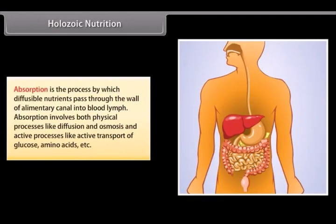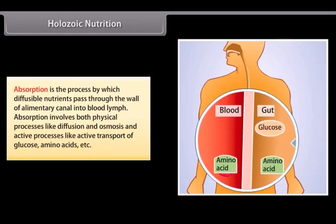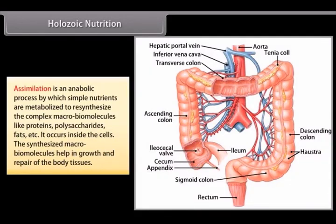Absorption is the process by which diffusible nutrients pass through the wall of the alimentary canal into blood and lymph. Absorption involves both physical processes like diffusion and osmosis, and active processes like active transport of glucose, amino acids, etc. Assimilation is an anabolic process by which simple nutrients are metabolized to resynthesize complex macro biomolecules like proteins, polysaccharides, fats, etc. It occurs inside the cells, and the synthesized macro biomolecules help in growth and repair of the body tissues.